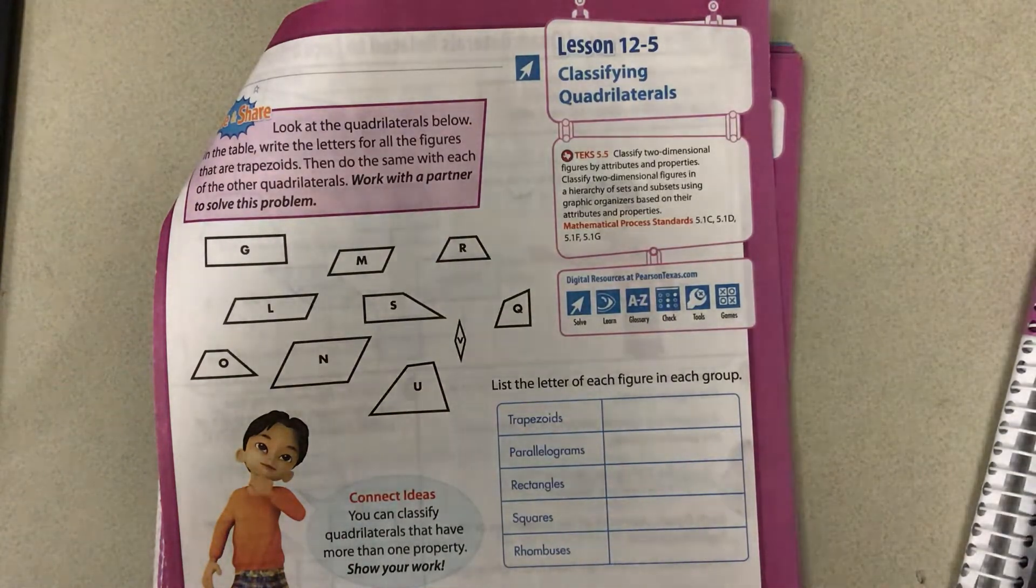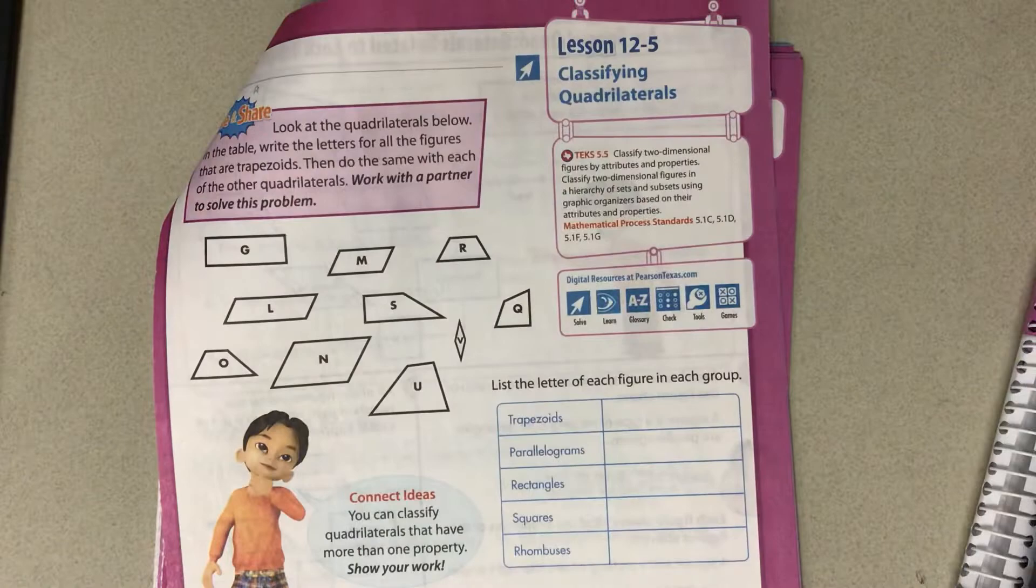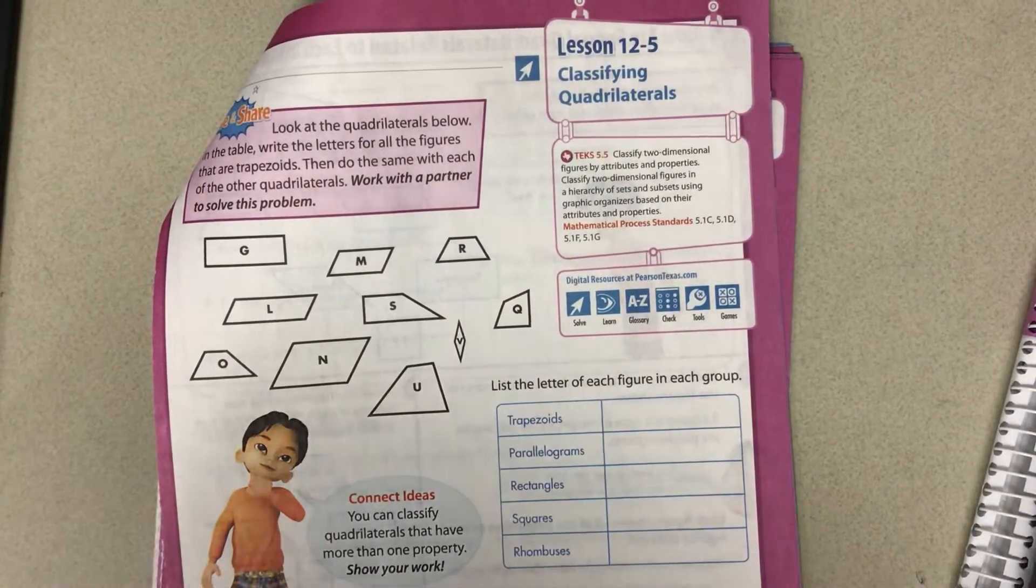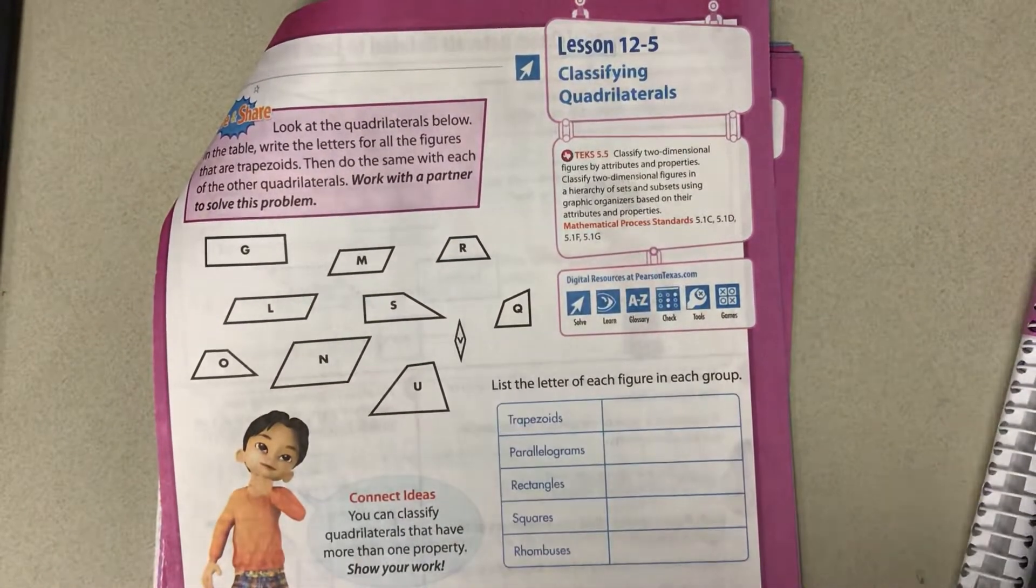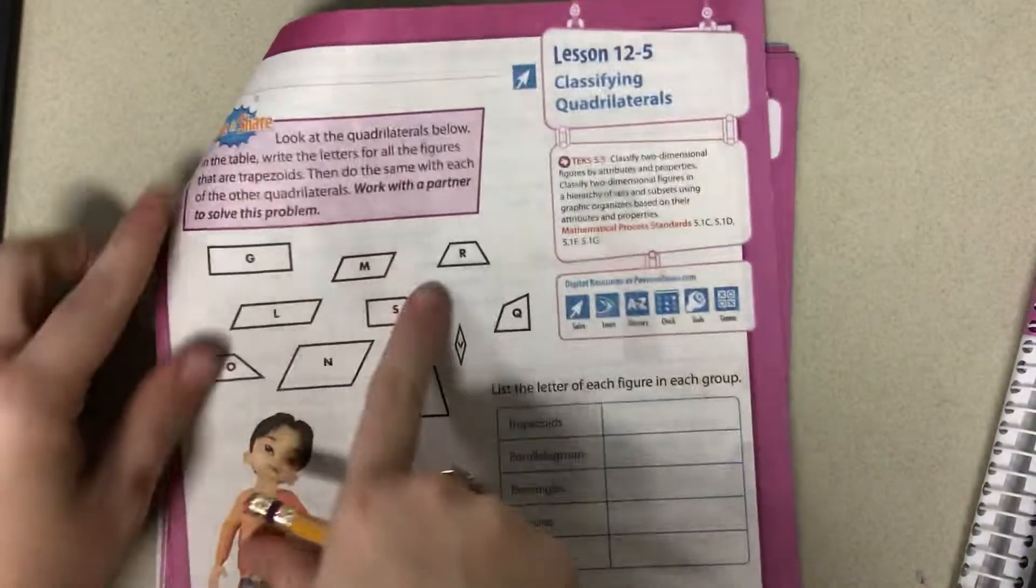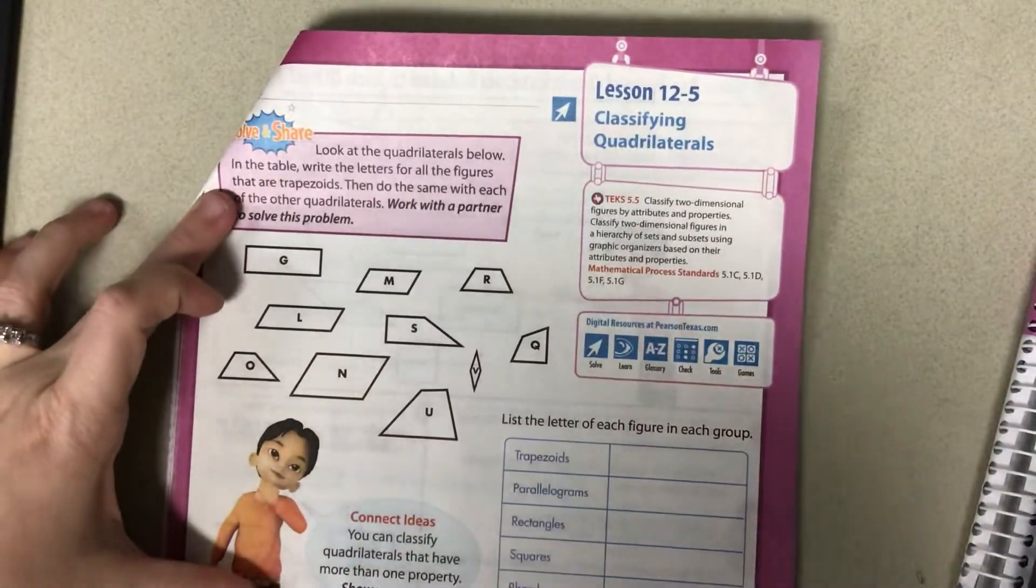Lesson 12-5 Classifying Quadrilaterals. So we are going to start on this first page here and we are going to look at these below and we're going to write the letters of which they are.